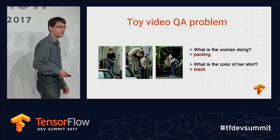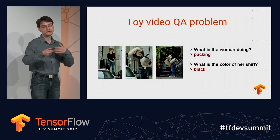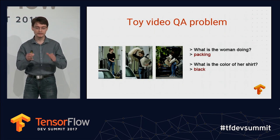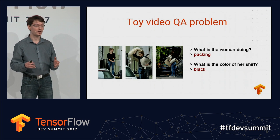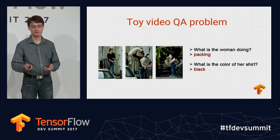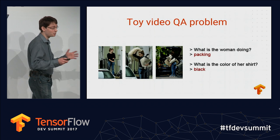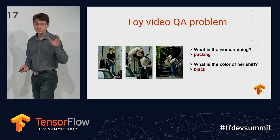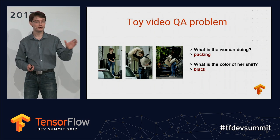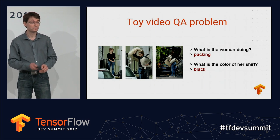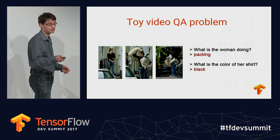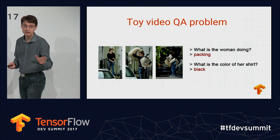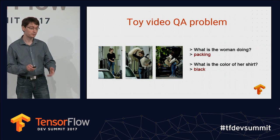If you look at the question 'what's the woman doing?' — she's packing. It's actually interesting, because if you only take one frame and try to train a ConvNet to answer the question, the problem is that just from one frame, she could also be unpacking. The reason you know she's actually packing is because of the order of the frames. If you look at the second frame, the rug is outside the car, and the next frame it's inside the car. So we expect our deep learning model to leverage this order to correctly answer this type of question.